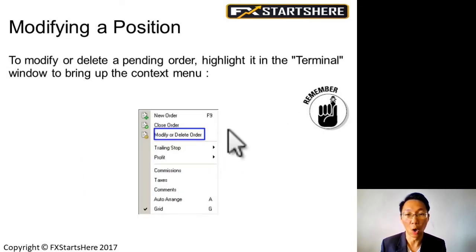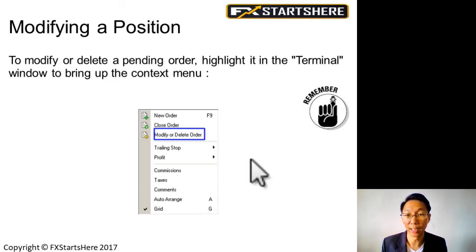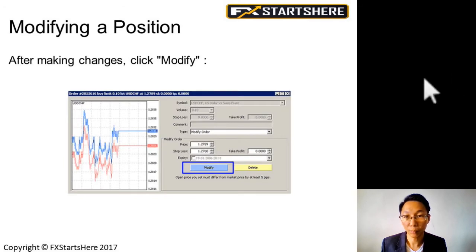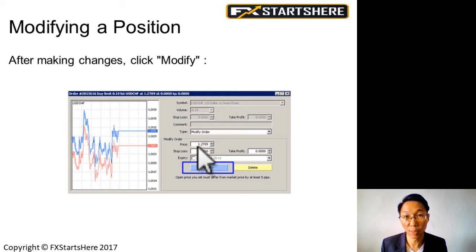After you have placed an order, it'll be running at the bottom in the terminal window. If you want to modify the order or delete the order, yes of course you can. Right-click on the order and this pop-up box appears, and then you can click on modify or delete. If you want to delete the order, straightforward — just click on delete. If you want to modify, most of the time people click modify because they want to change the stop loss or the take profit, or maybe even change the entry price if the trade has not been triggered yet. You make whatever necessary changes and then click on modify.